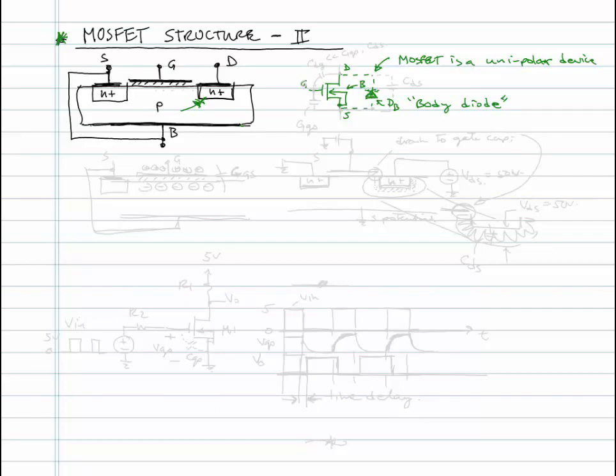So some other parasitics that are present involve energy storage in the electric field. Recall that in order to induce a channel, the channel goes between the source and the drain. In order to induce that you have to apply a voltage at the gate relative to the source, relative to the substrate.